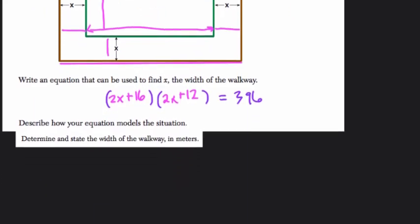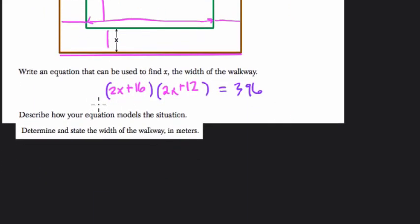All right, keep going. Describe how your equation models the situation. So there you could write how that 2x plus 16 represents the width, while 2x plus 12 represents your height. And to describe that you use the height of the garden, 12, plus 1x below it, 1x above it, to make 2x plus 12. And likewise here, you use the width of the garden, 16, plus an x on each side to make an expression for the width.